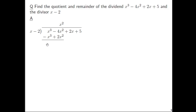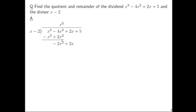x cubed plus negative x cubed is 0, and then negative 4x squared plus 2x squared is negative 2x squared. Bring down this 2x. Now, same deal — think about what we place here: something times x is negative 2x squared. Something times x is negative 2x squared, so that something ought to be negative 2x. So we have a negative 2x here, and then negative 2x times the quantity x minus 2. If you distribute the negative 2x to x minus 2, you'll have negative 2x squared plus 4x.